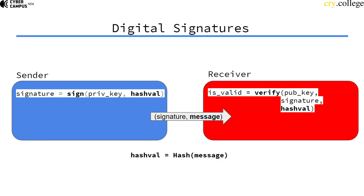The other side computes the hash value of this message again and verifies the signature against this hash value. Why do we do that? First, for performance reasons — hash values are much shorter than messages, so it's faster to sign them. Also, since we use finite fields of a certain size, it wouldn't be possible to sign something properly that is larger than the finite field. So we have to hash the actual message so it's short enough to be directly used in our field.